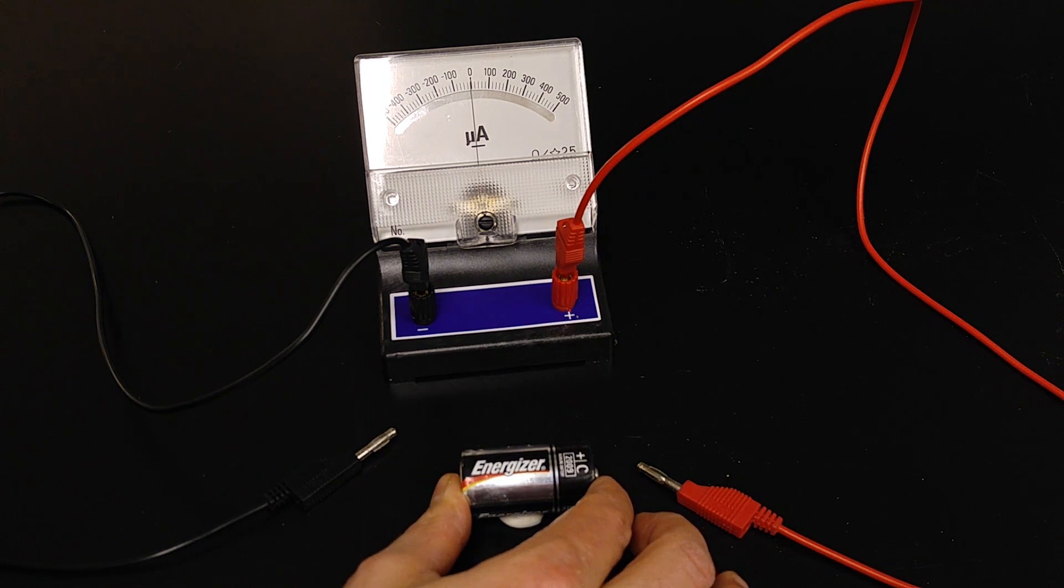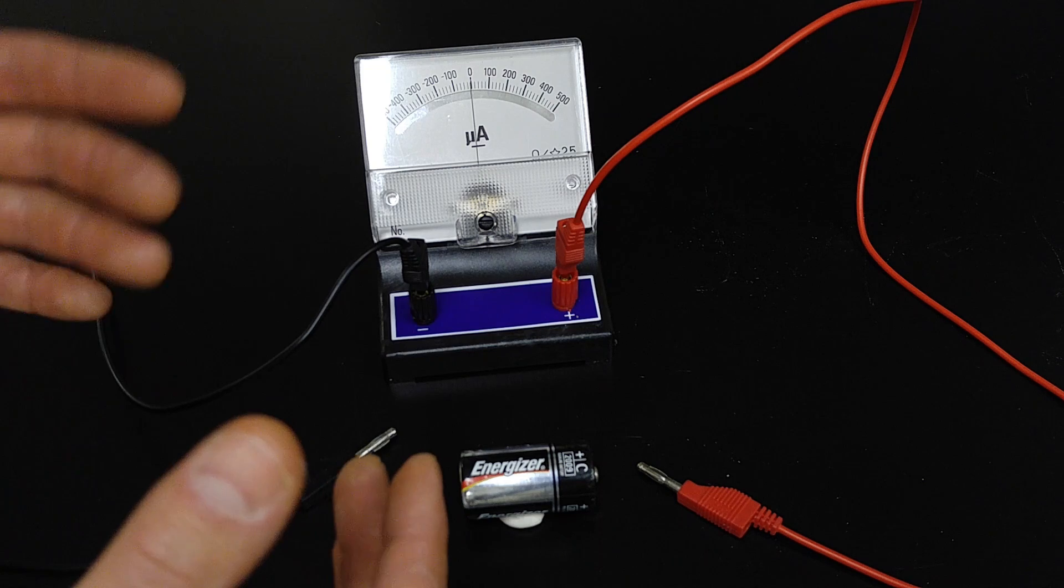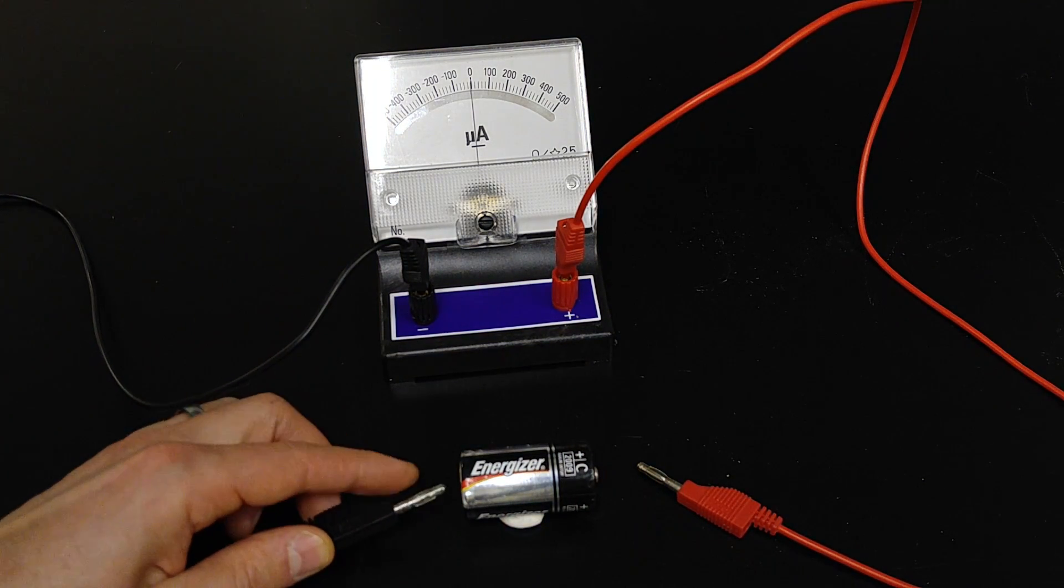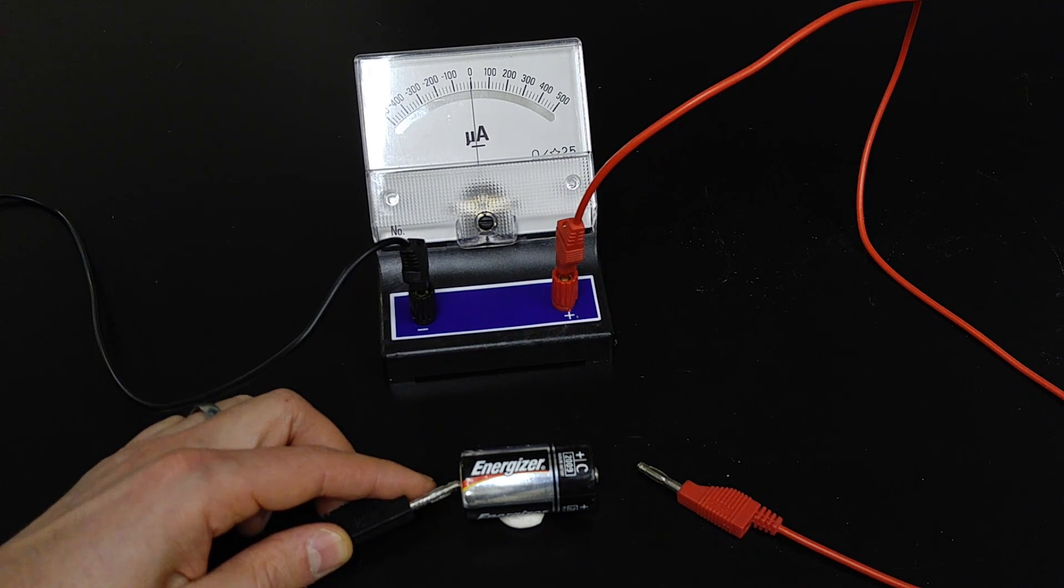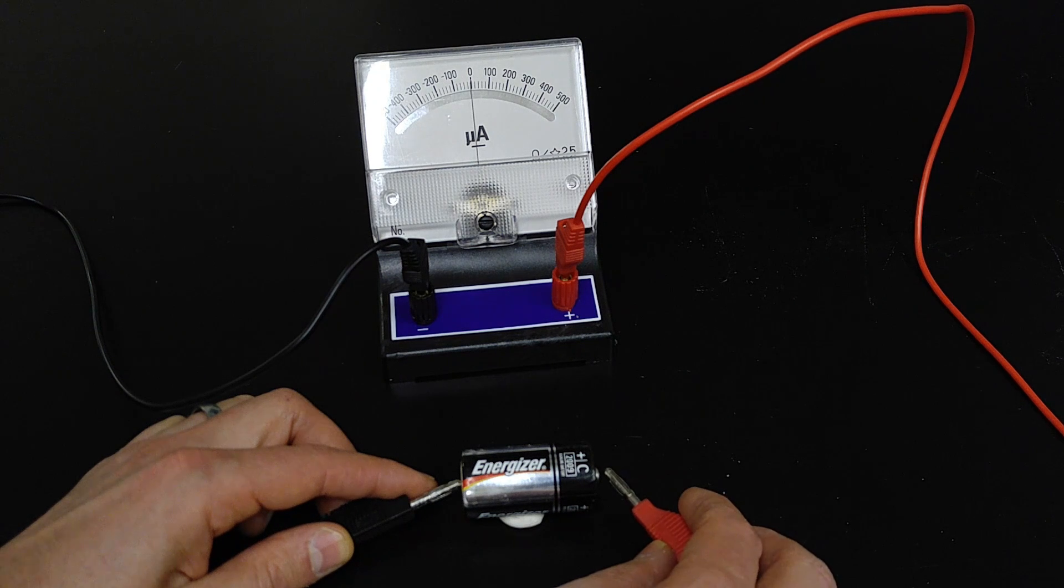So I've got just a C cell battery, high potential, low potential side, so we can just play around with this a little bit to see how this thing works. I'm going to connect the black wire to the low potential, or zero volt side. I'm just going to tap the red wire on the high potential side of the battery, and let's see what happens.